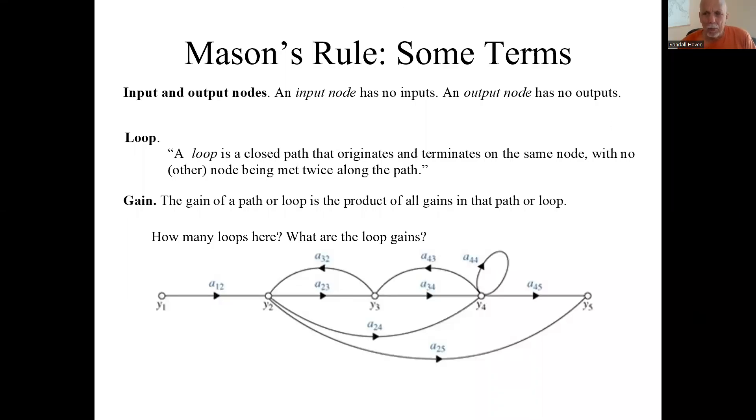I'm about to start talking about Mason's rule or Mason's formula. In the previous video, I had defined a bunch of terms that are required to use Mason's rule. One term I didn't define well enough was the gain of a path or a loop. All these A's in this signal flow diagram are individual gains that go from node to node.